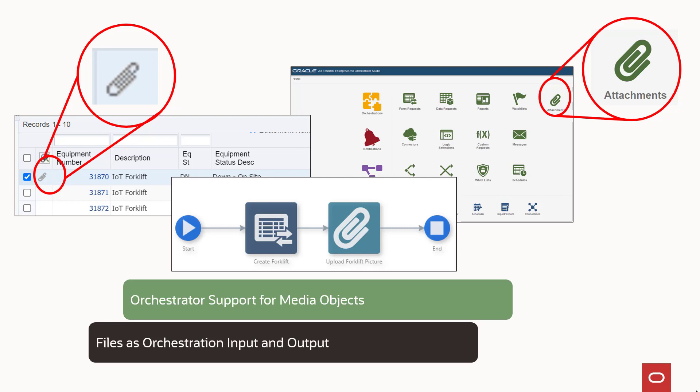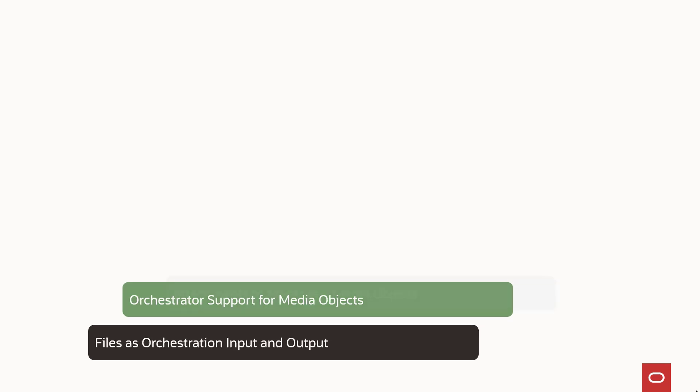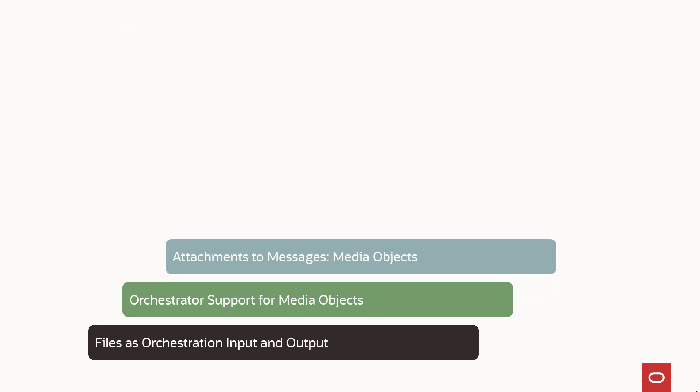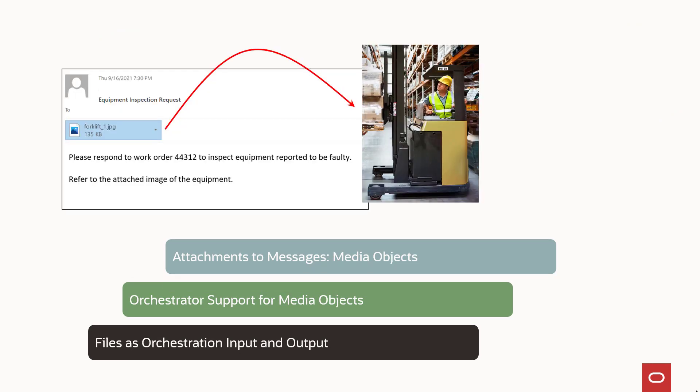And finally, it is now possible to include attachments in Orchestration notification messages. Perhaps your Orchestration is sending an email notification to a field technician with a work order to fix a piece of equipment — now you can include a photo of the broken equipment. Or perhaps you are sending an email to a customer with a scanned image of a document — now you can make that part of your Orchestration.